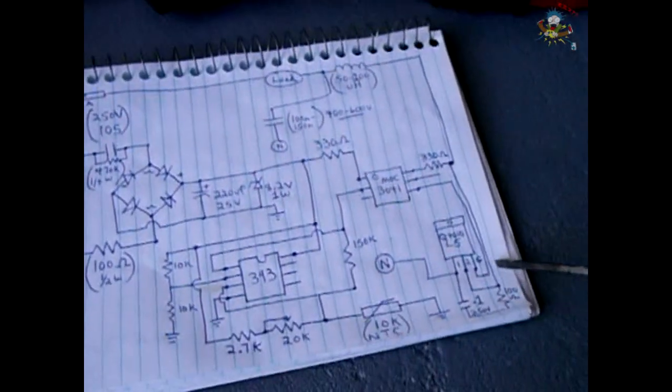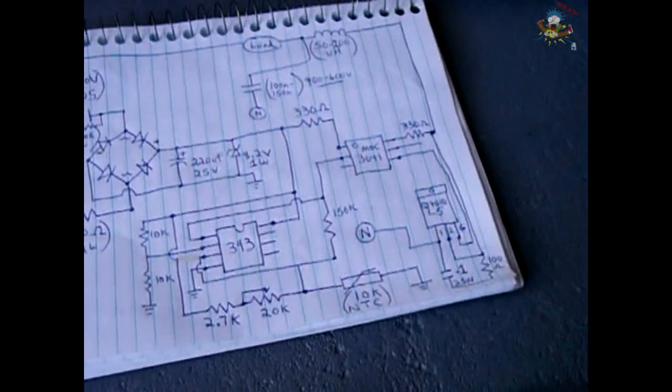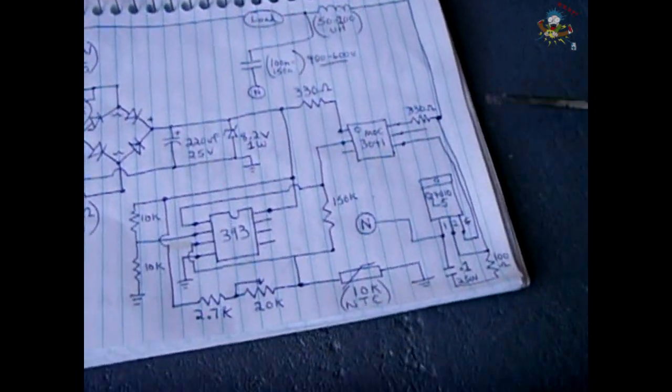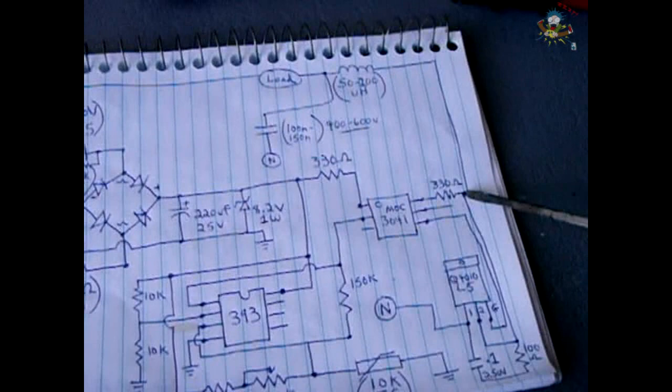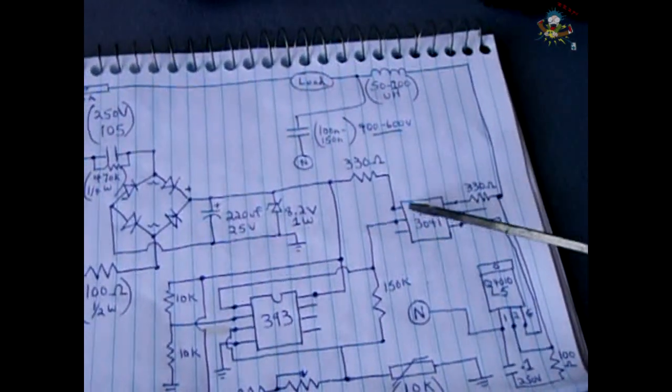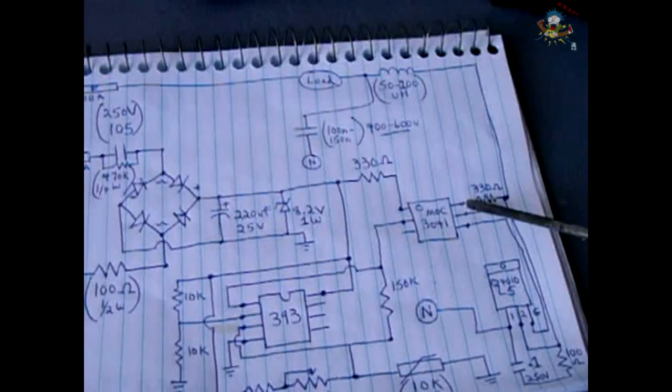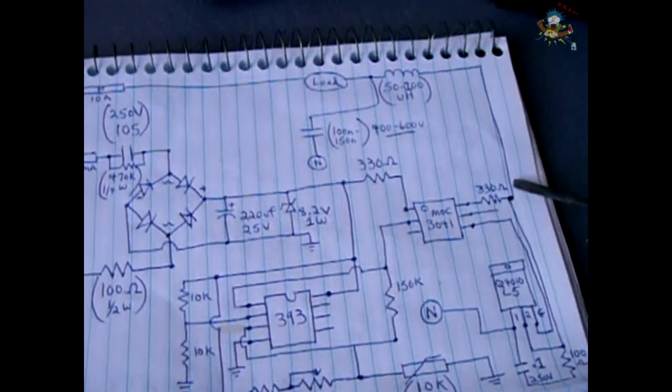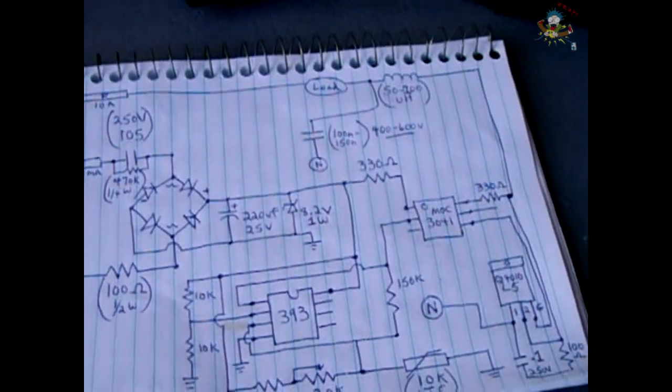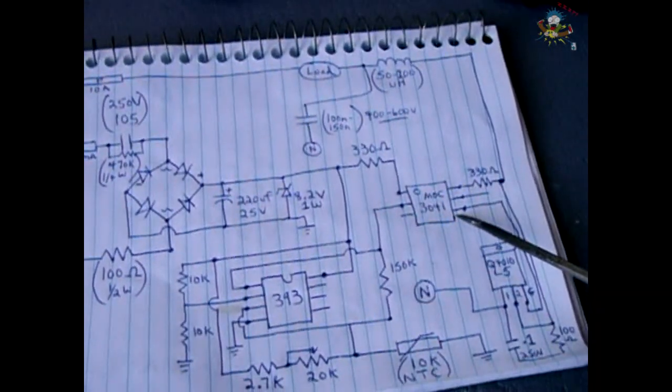After it flows through the noise filtering portion of the circuit through this inductor, it then flows into MT2, main terminal 2. Off of the main terminal 2 tap you have a 330 ohm resistor going into the MOC 3041 into pin 6.